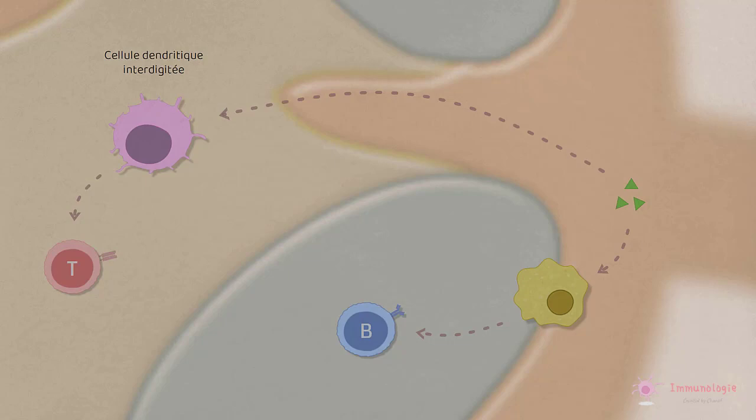Maintenant que nous avons décrit les fonctions des CPA et comment les antigènes sont capturés et transportés vers les organes lymphoïdes, dans les prochaines vidéos, nous nous tournerons vers le mécanisme de présentation et en particulier le rôle des molécules de CMH dans ce processus.